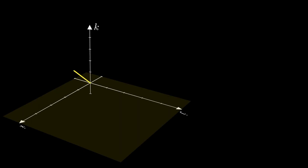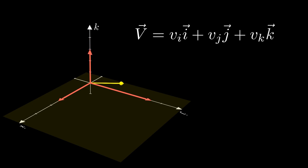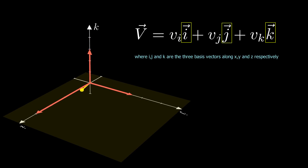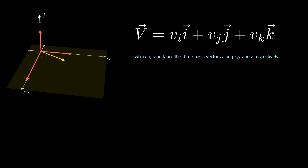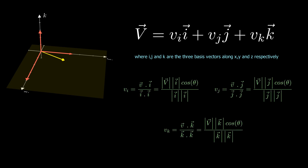From vector space theorem, we know that any arbitrary vector can be represented in terms of its orthogonal coordinates. i, j, and k are the three basis vectors along x, y, and z-axis respectively, and the value of each component equals the dot product of a vector with the corresponding basis vector divided by the norm of that basis vector.